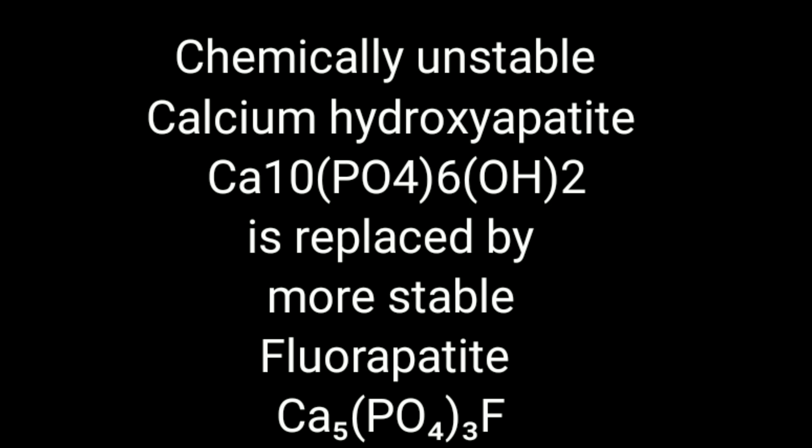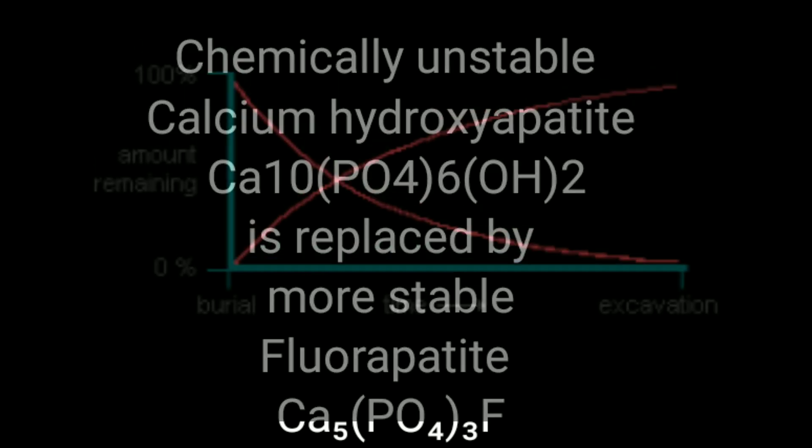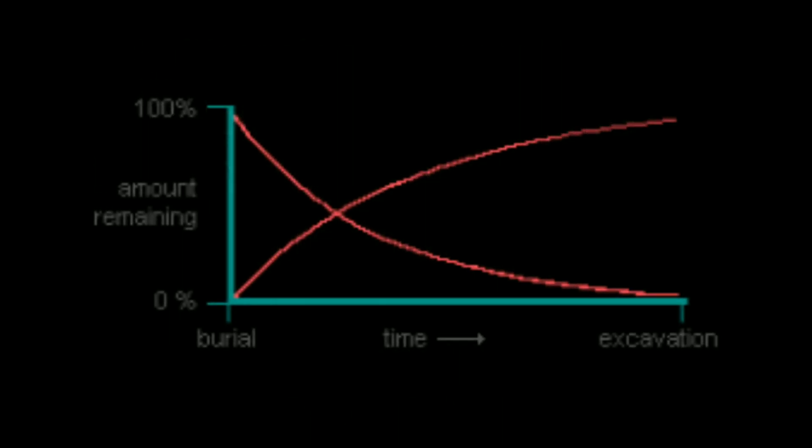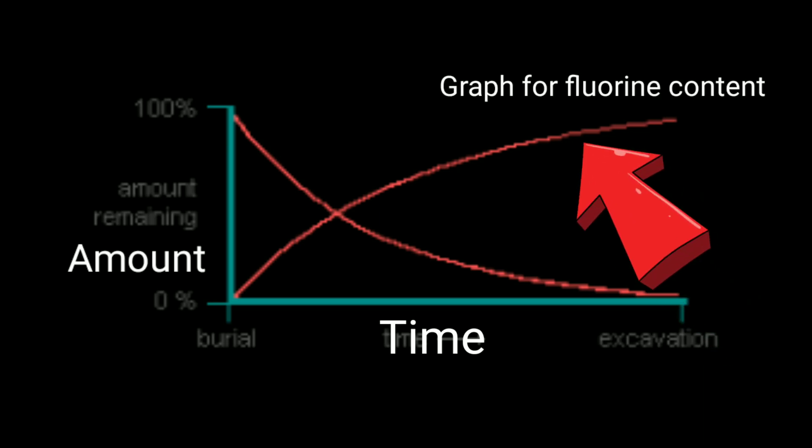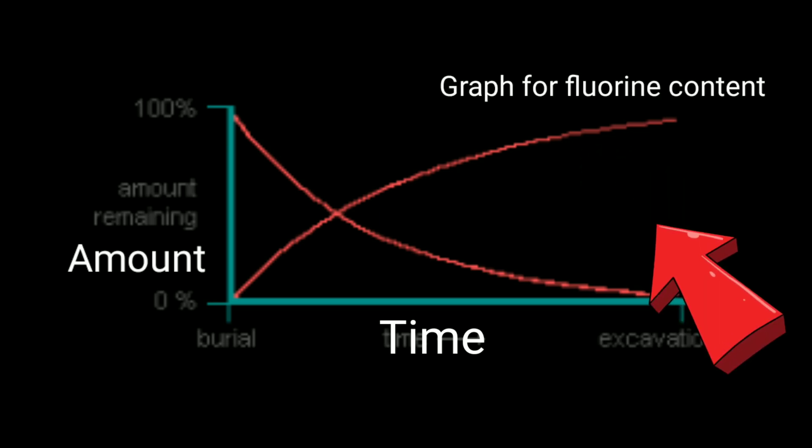Groundwater and soil in most parts of the world contain small amounts of fluoride, and these ions can replace the hydroxyl ions in bone mineral to form fluoroapatite. In this way, the chemically unstable calcium hydroxyapatite is gradually replaced by the more stable fluoride. From the amount of absorbed fluoride in a sample, the time it has been in the soil can be estimated.